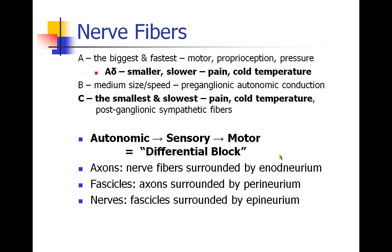There are three kinds of nerve fibers. The biggest, thickest, fastest fibers are called A fibers, which typically transmit motor signals, pressure sensation, and proprioception.